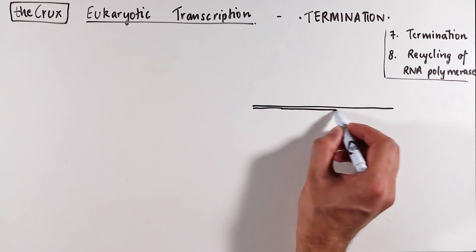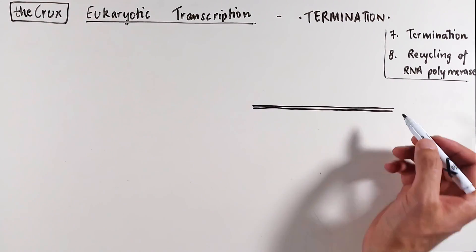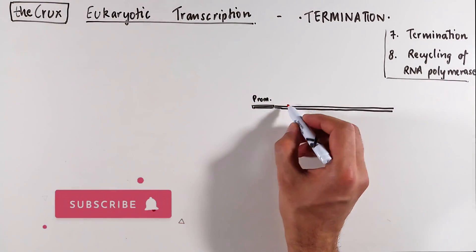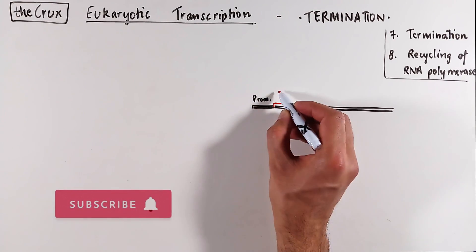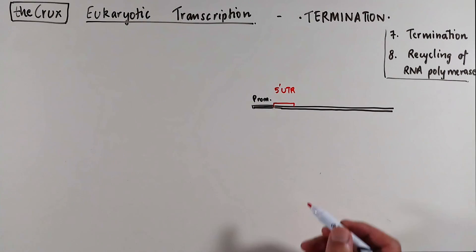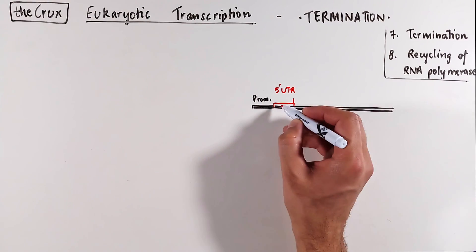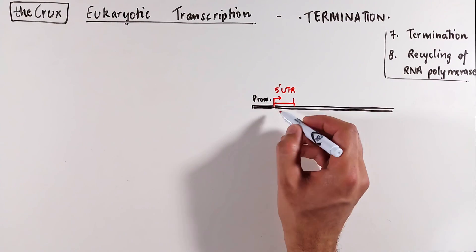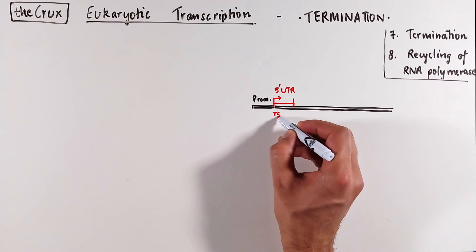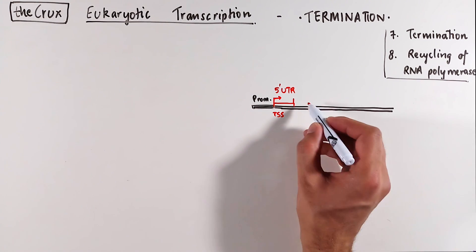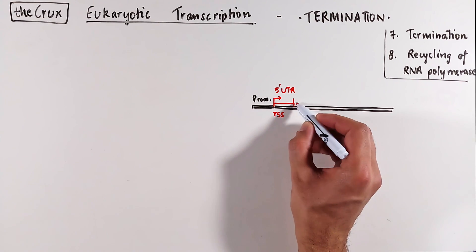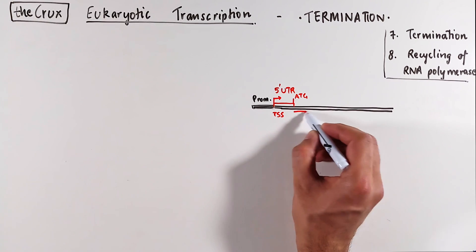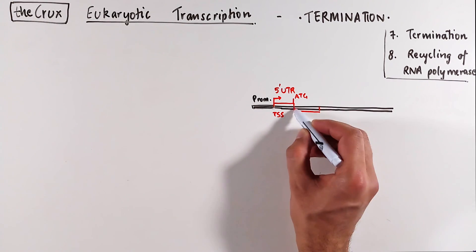Just a quick recap on the structure of a gene: we have the promoter of a gene, a 5' untranslated region (UTR) of the gene, which starts with the transcription start site. UTRs are just parts of the genes that are transcribed into the RNA, but are not used to make proteins.